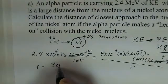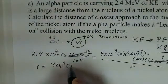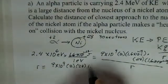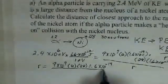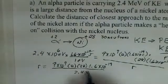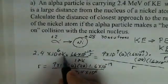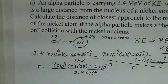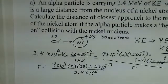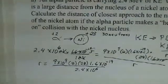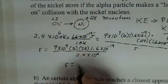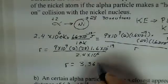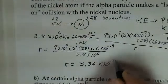Now we can go ahead and calculate R. We still have 9×10⁹, still have the 2 and the 28, still have one factor of 1.6×10⁻¹⁹, and we have to divide by 2.4×10⁶. The electron volt units cancel at that point — we've done everything in standard metric units, so we'll come up with meters. You should pause, run this through your calculator, and rejoin us when you're done. I obtained, rounding off, 3.36×10⁻¹⁴ meters.